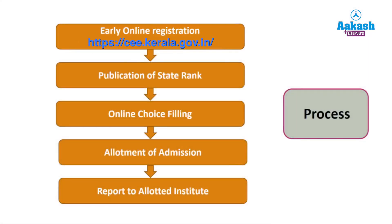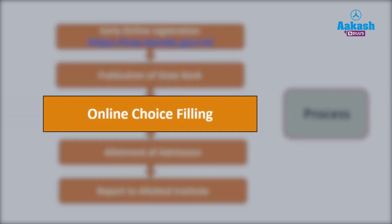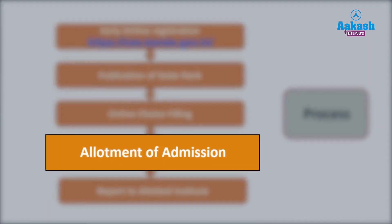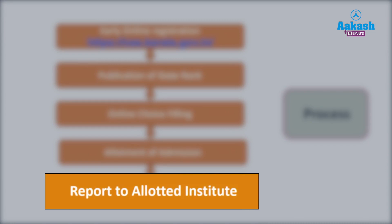Post NEET results, the publication of state rank will be done by the state committee. Then you need to choose the colleges of your preference and fill them in the online choice-filling procedure. On the basis of your state rank and preferred choices, a seat will be allocated to you, and you need to report to the allotted institution as per the provided guidelines.